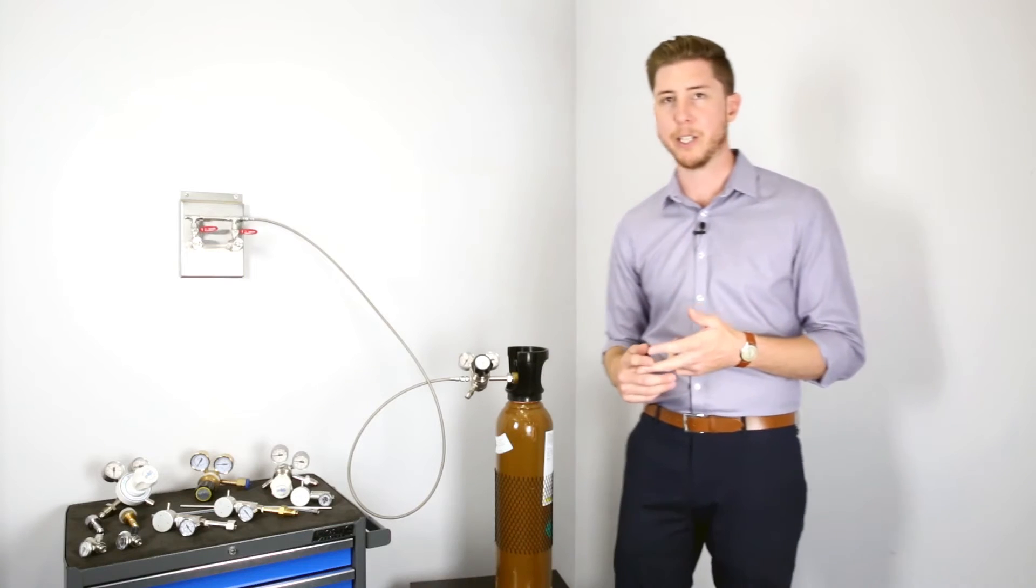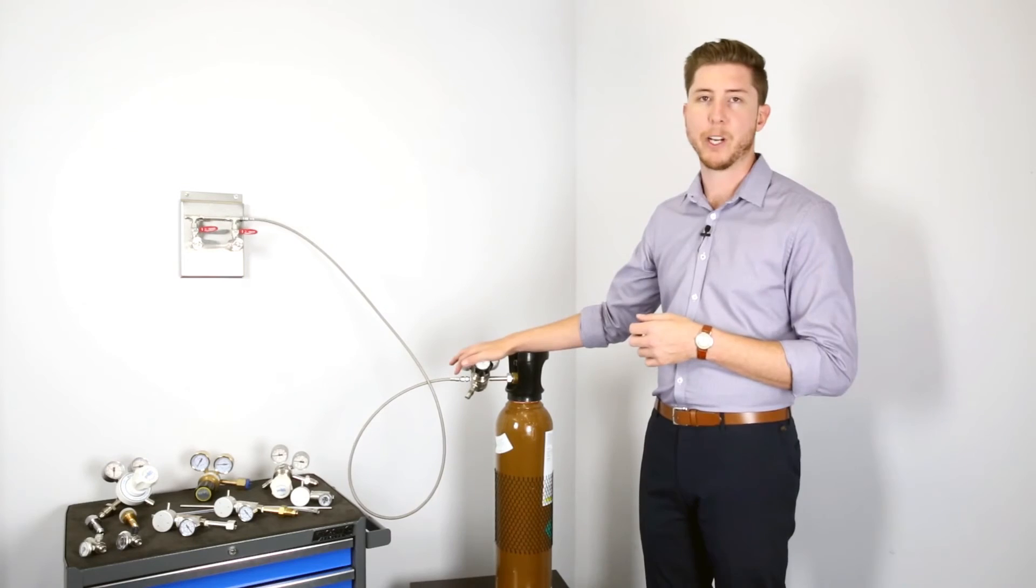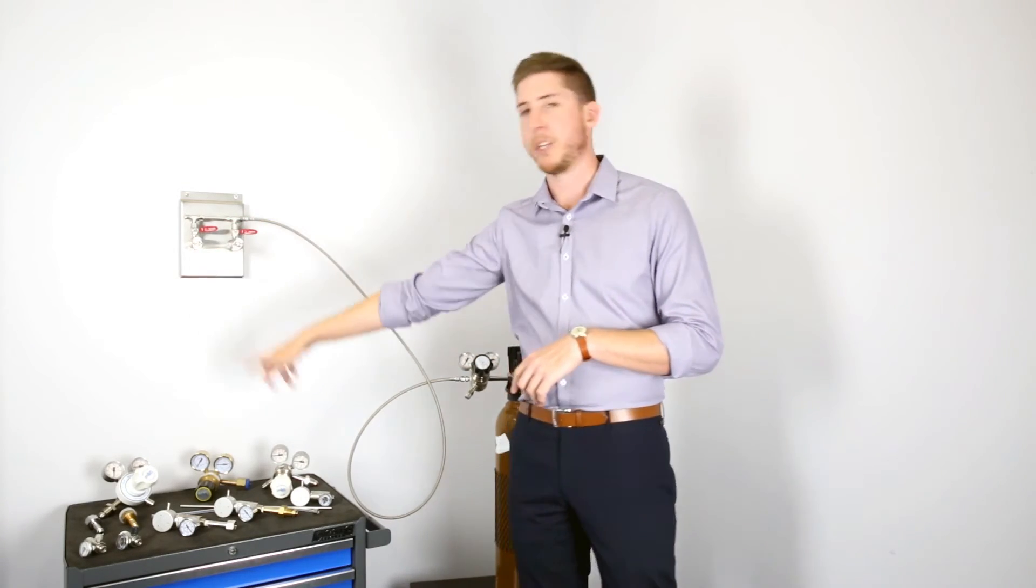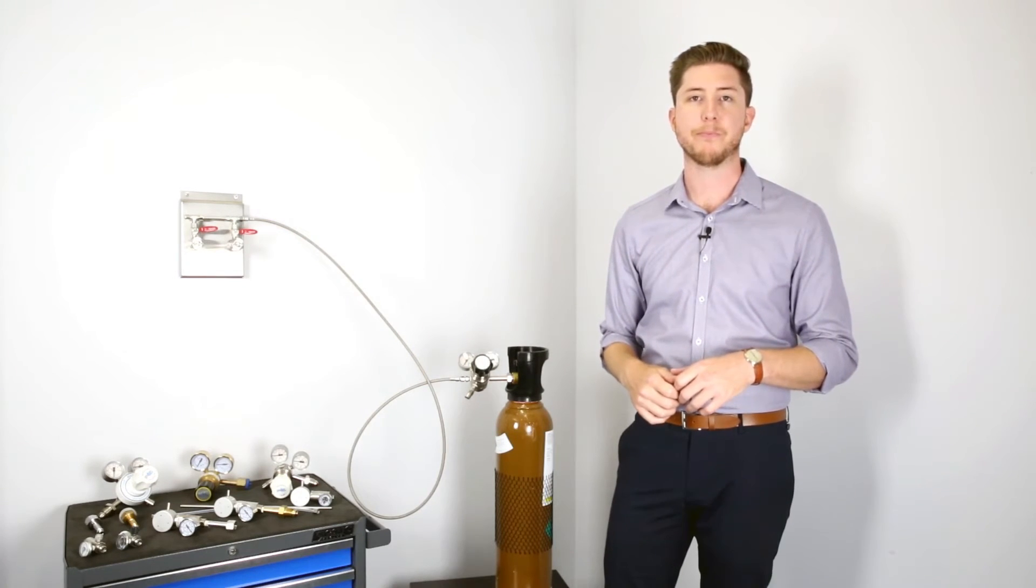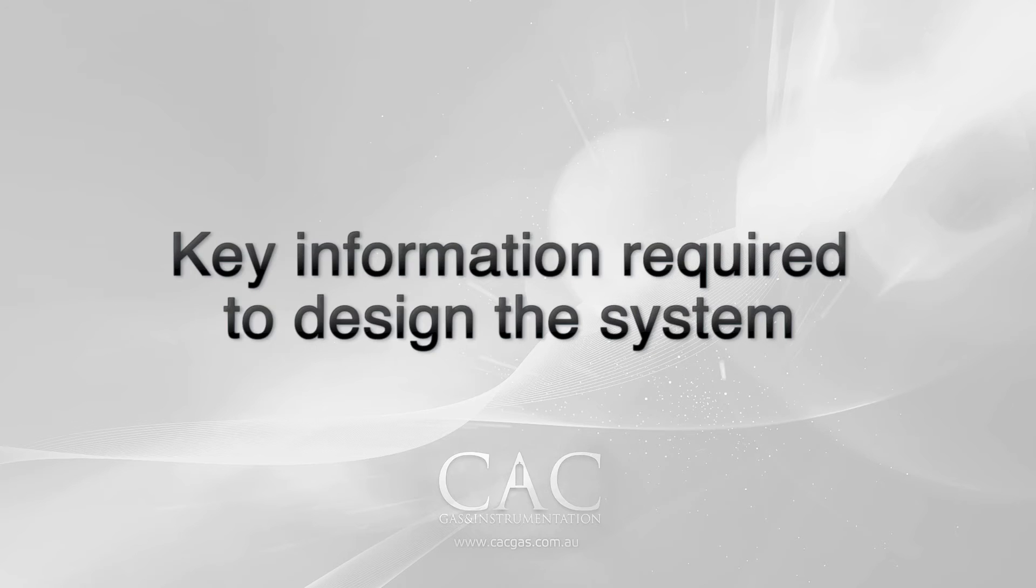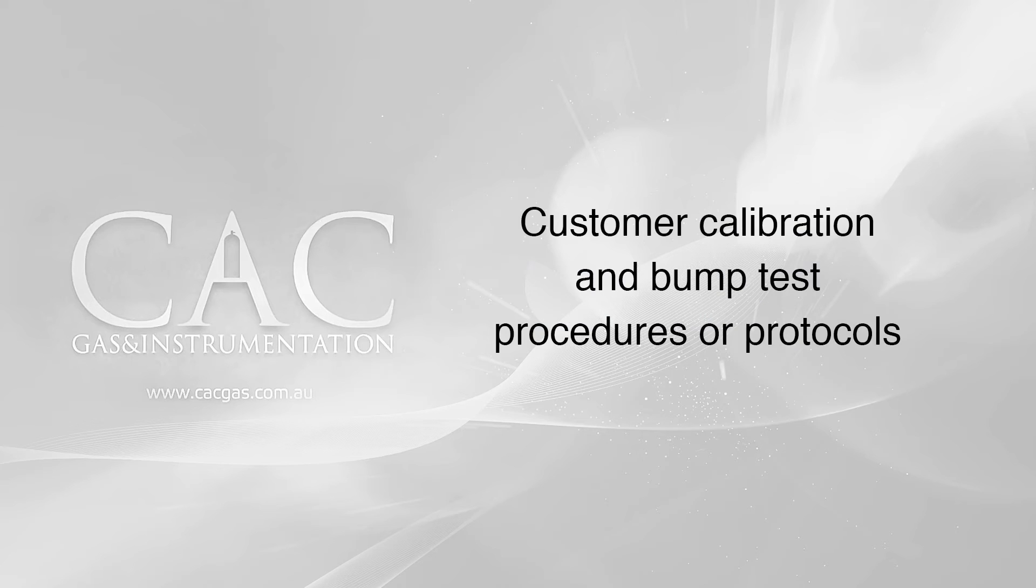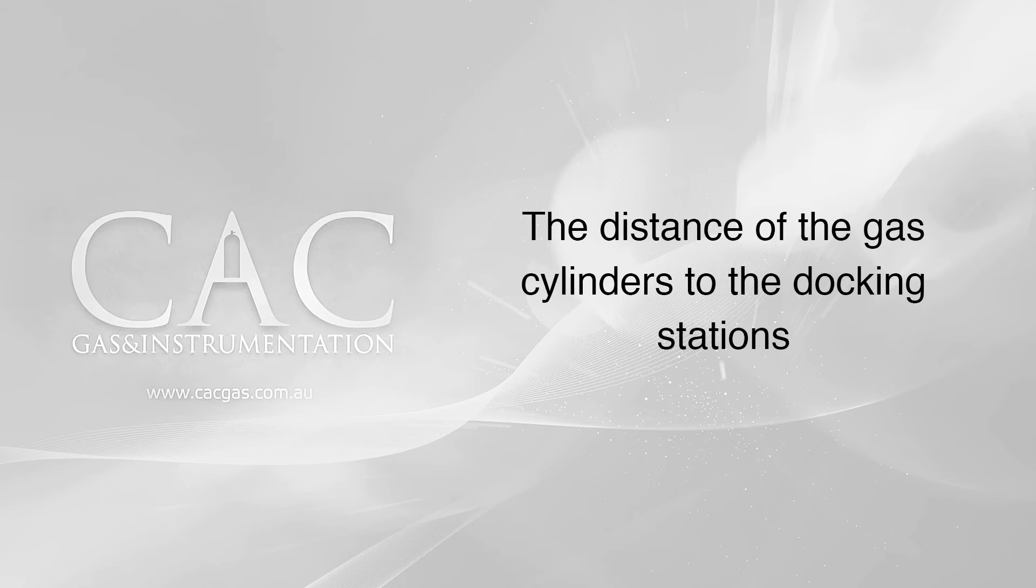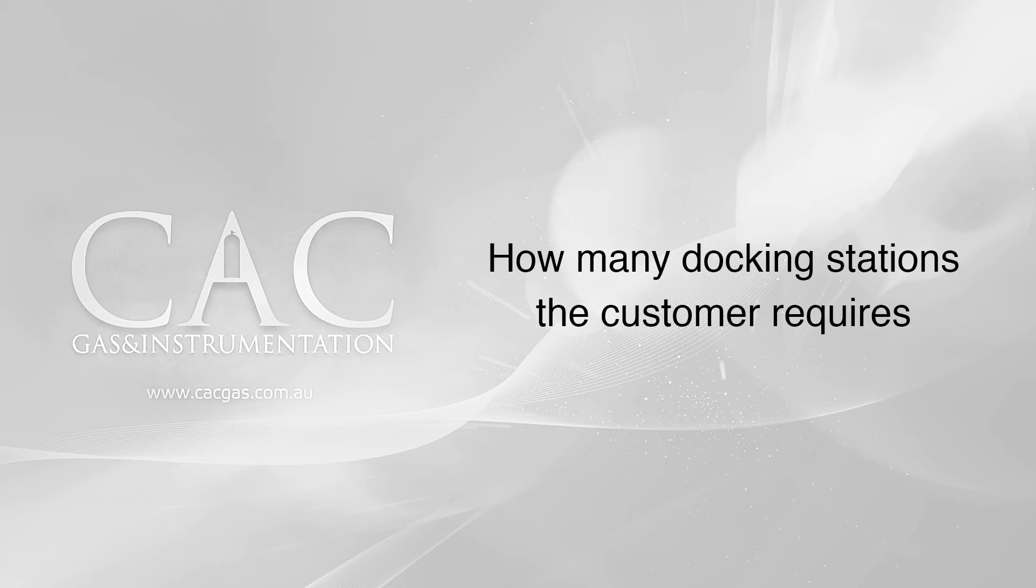A GDS consists of a gas cylinder, a cylinder mount regulator, some hosing and tubing to an outlet panel which can now connect down to your testing point or docking station. The key information that is required to design the system includes gas mixture and gas consumption detail, customer calibration and bump test procedures or protocols, the gas mixtures corrosive nature or non-corrosive nature, the distance of the gas cylinders to the docking stations and how many docking stations the customer requires.